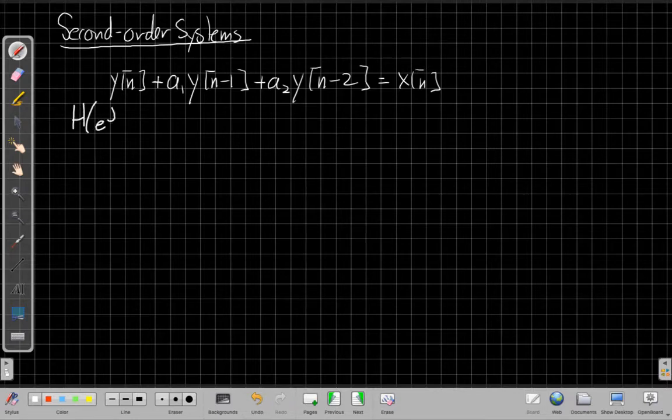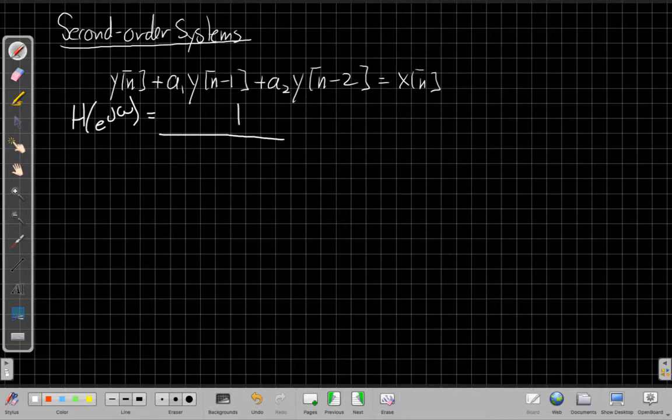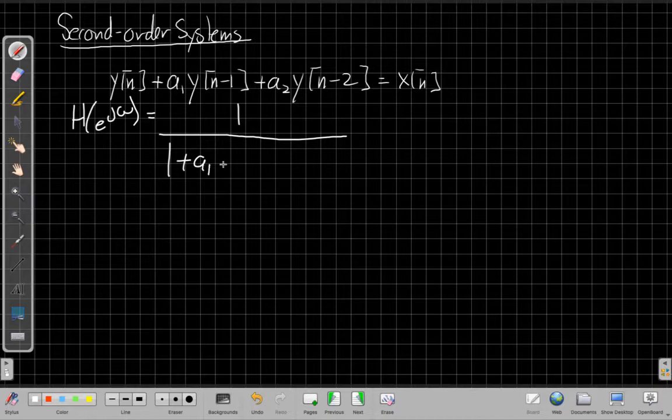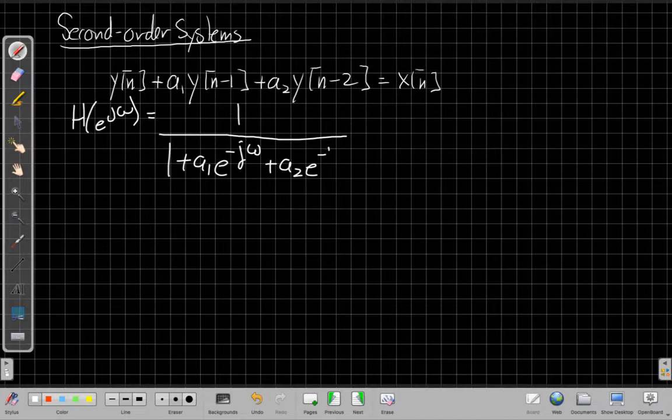Alright, so if we do this, we know that we get the coefficients in the numerator are just the coefficients of the input, x of n. The denominator is the coefficients of the delayed terms for y of n.